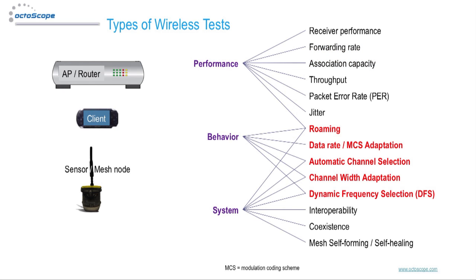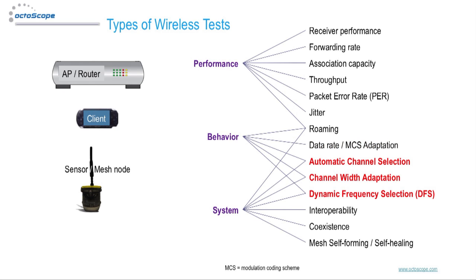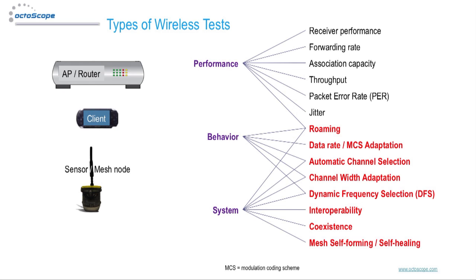Behavioral tests verify the implementation of mobility and adaptation functions crucial to realizing optimal performance. Focus tests like data rate adaptation, channel adaptation, and roaming can help shine a light on the causes of poor throughput and packet error rate performance. System tests validate the behavioral, interoperability, and coexistence protocols that must work properly to achieve reliable wireless performance and happy users.